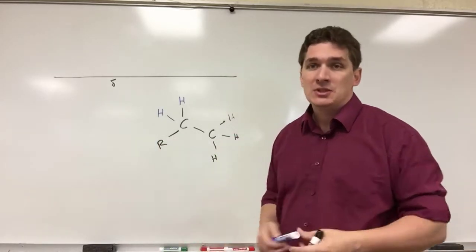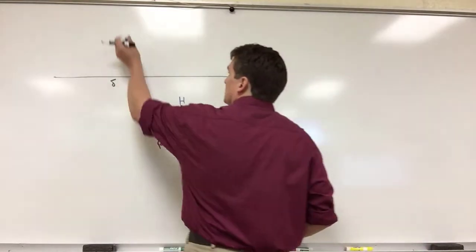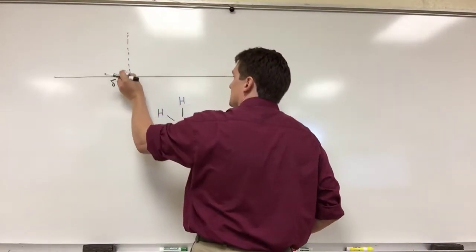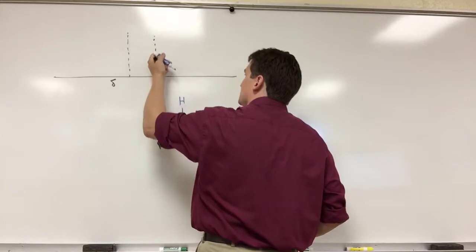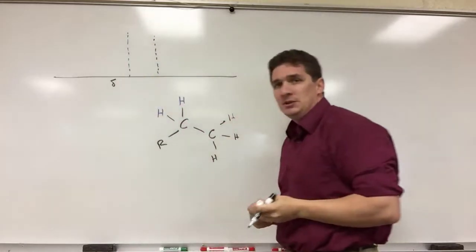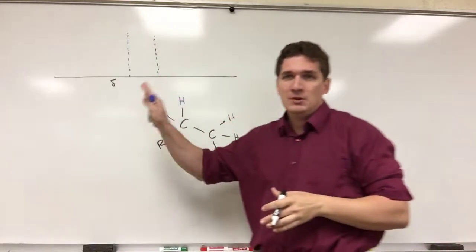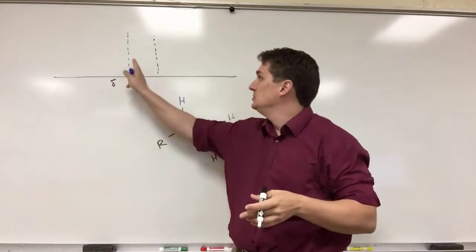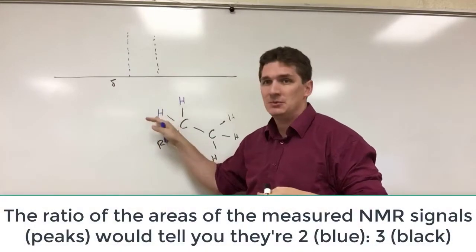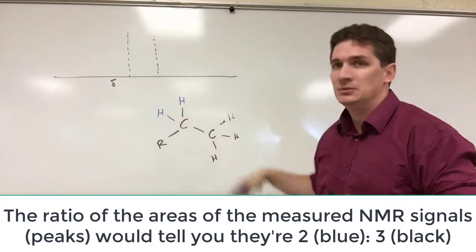So you would have the chemical shift you expect for both of them. Let's say for whatever reason the blue hydrogens sit here and your black hydrogens sit here. What you would expect off the bat is just to have one peak for each and their relative areas would be two and three because we have two protons here and three here.